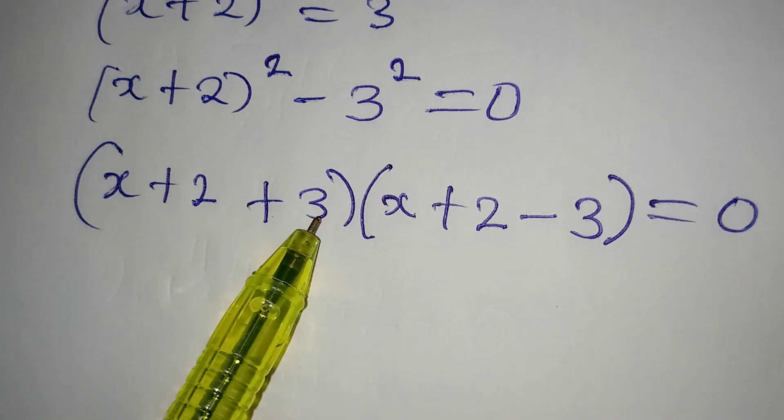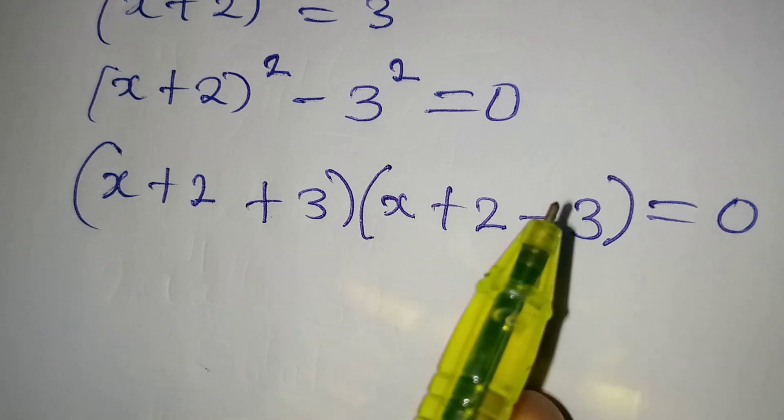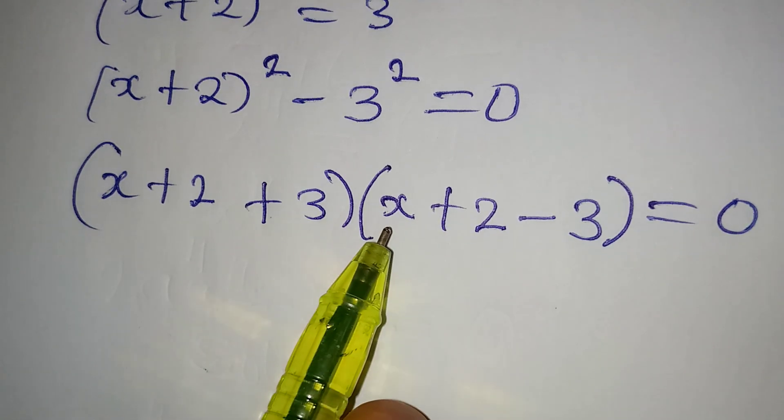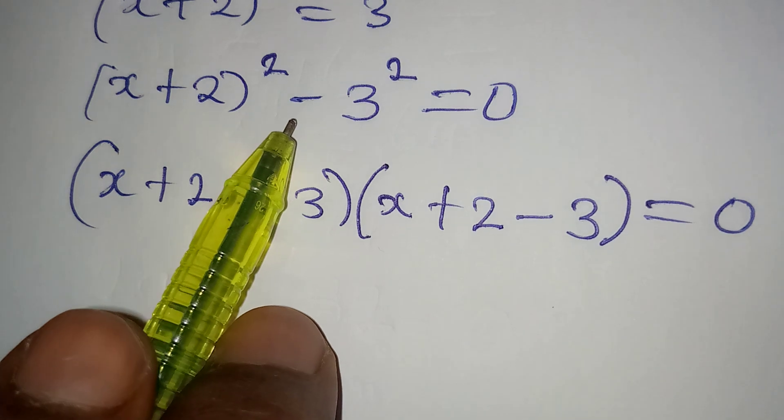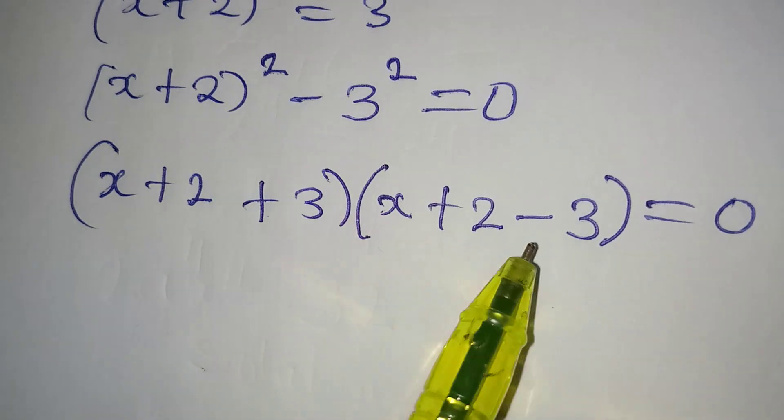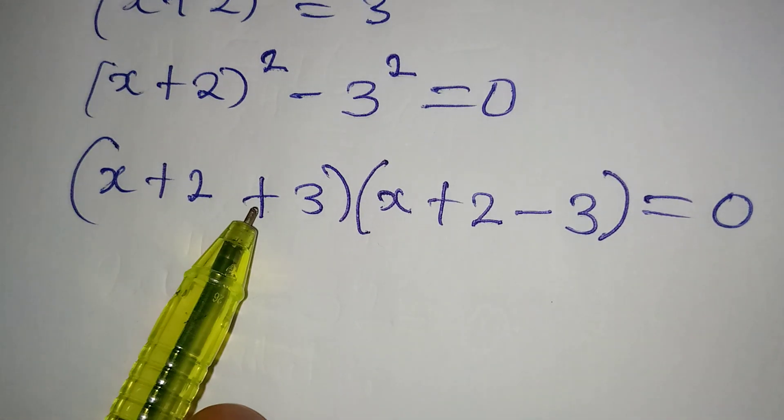The first term there is x plus 2 which is this, then plus 3, then for the second bracket, x plus 2, then this,